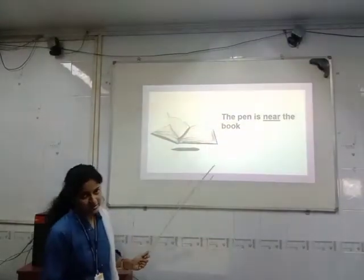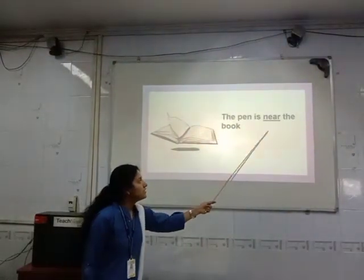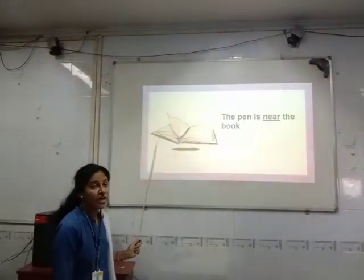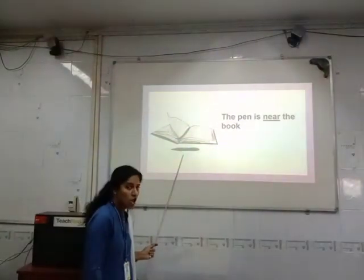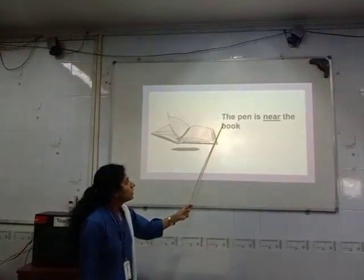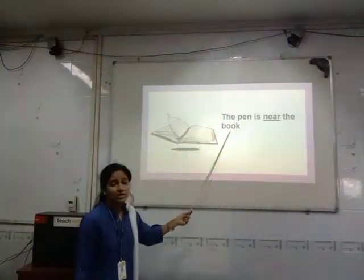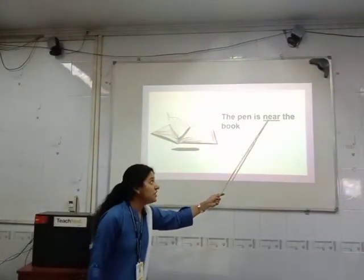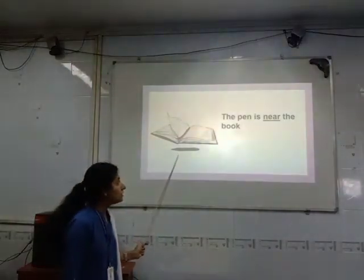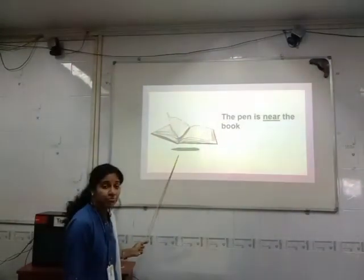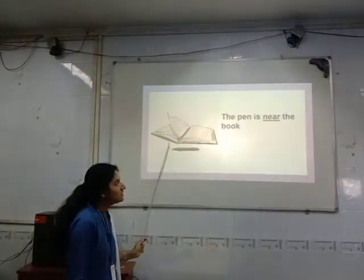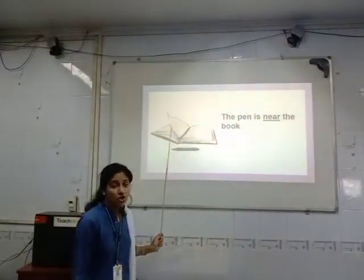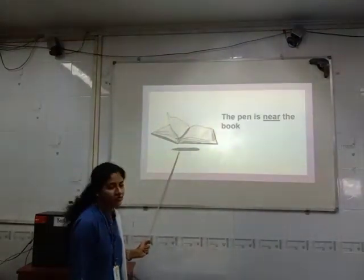Now see the next example: The pen is near the book. In this picture you will see where is the pen. The pen is near the book. The word which I have underlined is 'near'. So the word 'near' shows us exactly the position of the pen.